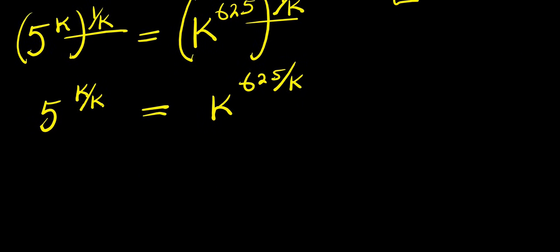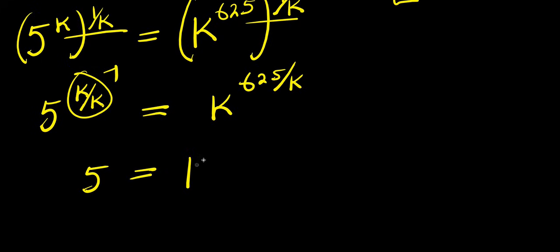I have 6/5 divided by k. So from here, k divided by k is 1, so I have 5 equals k to the power of 6/5 divided by k.